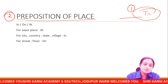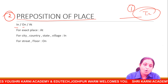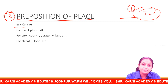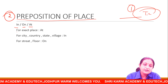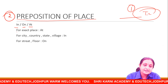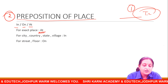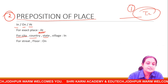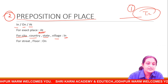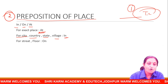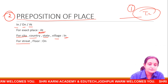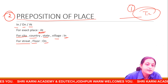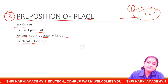तो prepositions of place में: in, on, at. In कहां use होगा — for exact place पर at use होगा. For city, country, state, village के लिए in use होगा. और for street और floor के लिए on use होगा. अब इनके examples देखेंगे अपन.